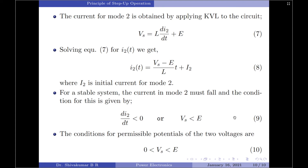The conditions for permissible potentials of the two voltages are: 0 < VS < E. Only when this condition is satisfied can energy be transferred from the source to the other DC source. Equation 10 indicates that VS must be less than E to permit power transfer from a fixed voltage source to a fixed DC voltage at the other end. One of the best examples of this application is electrical braking of DC motors, where the motors operate as DC generators and the choppers permit transfer of power to a fixed DC source or to a rheostat.